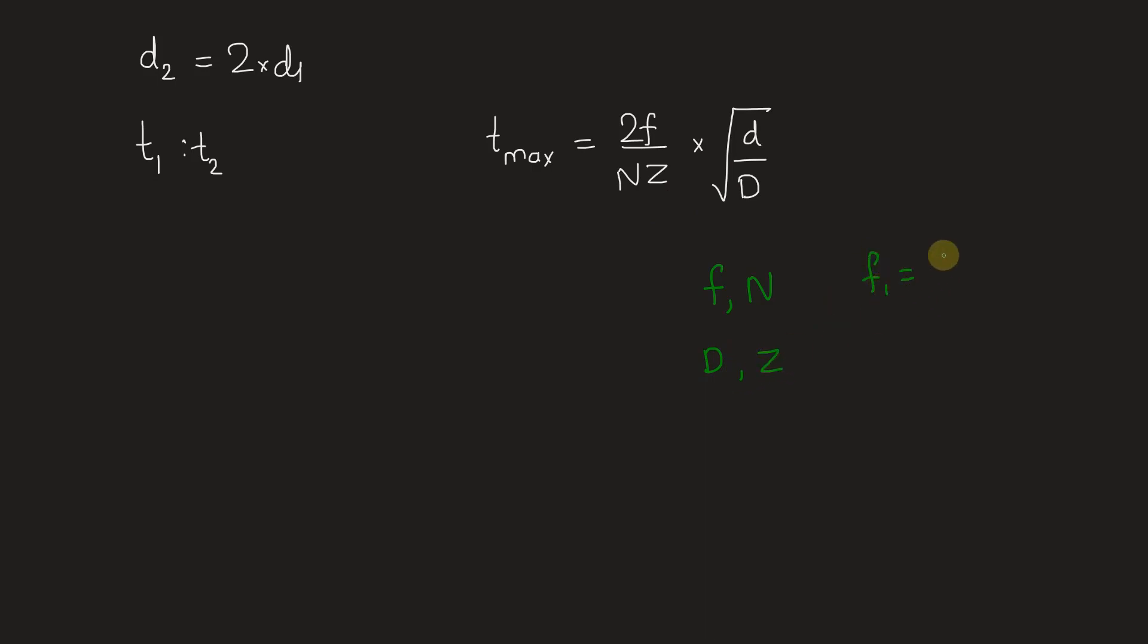So we have F1 equals F2, N1 equals N2, capital D1 equals capital D2, and Z1 equals Z2 as the same cutter is used.